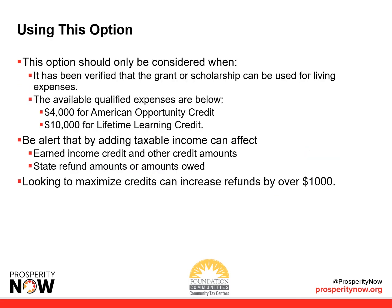This option should only be considered when it has been verified that the grant or scholarship can be used for living expenses. Be alert that by adding taxable income, it can affect earned income credit and other credit amounts, as well as state refund amounts or amounts owed. Looking to maximize credits can increase refunds by over $1,000.